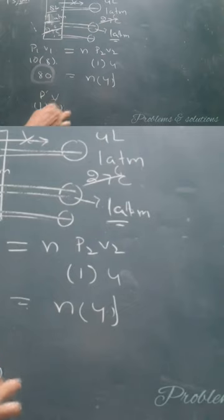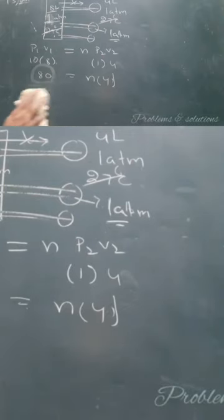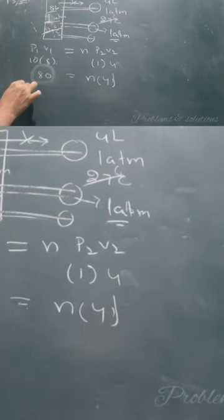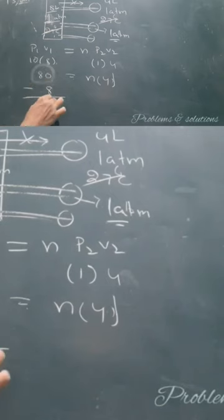The volume is 8, so it will remain. The initial is 80, and the remainder which remains in the container is 8. So how much amount can be transferred?